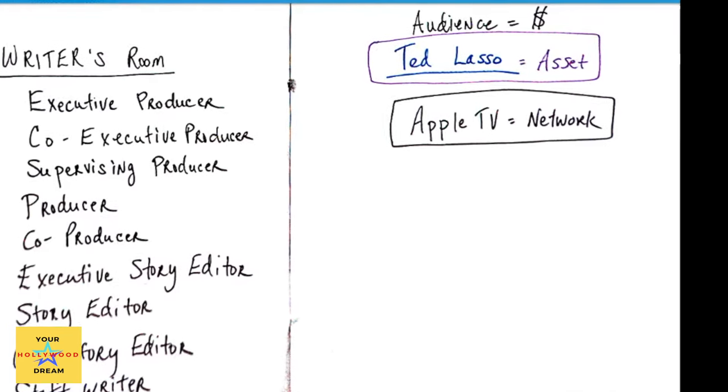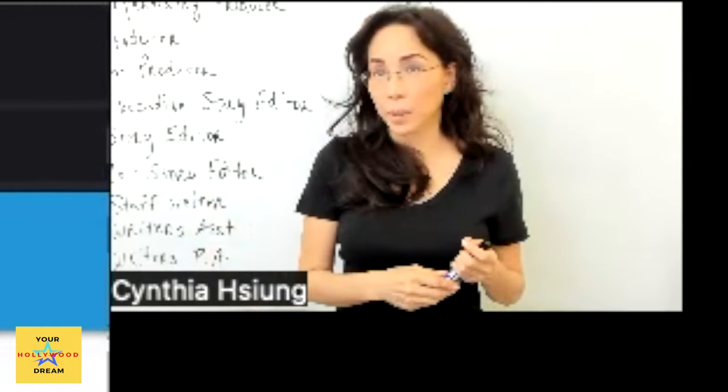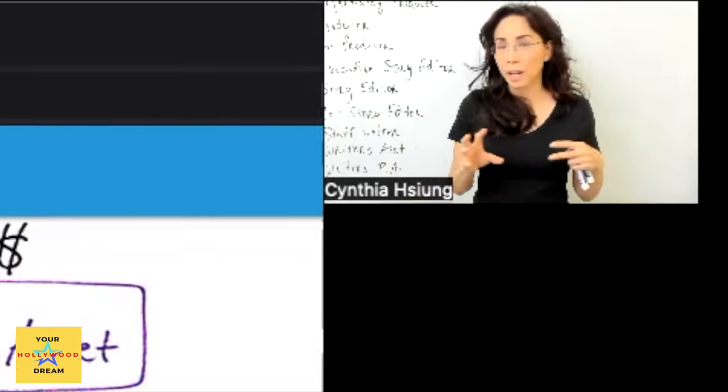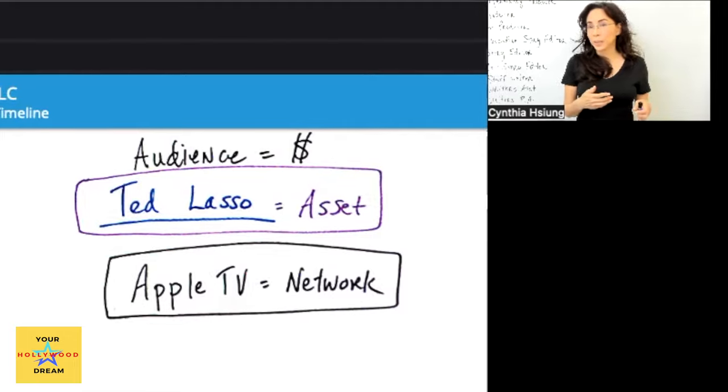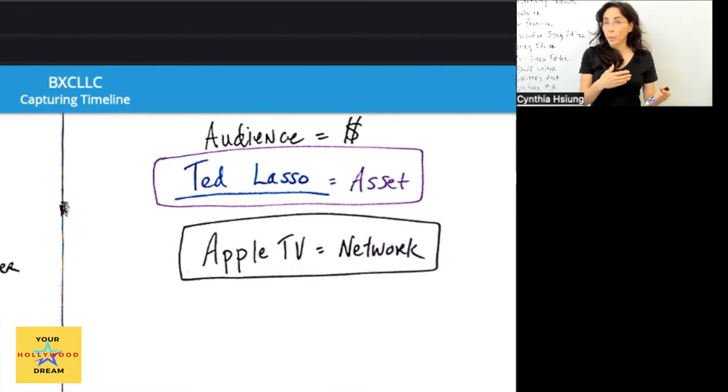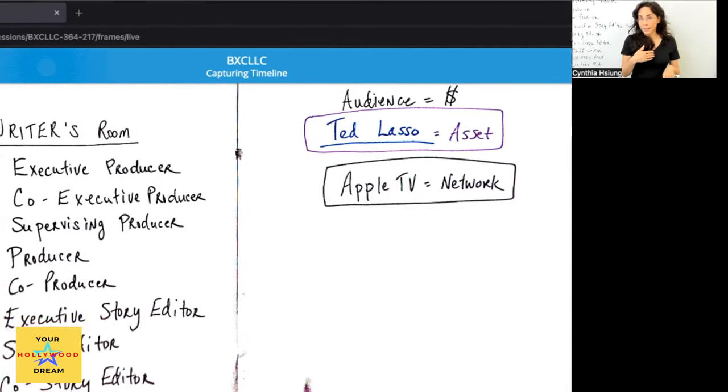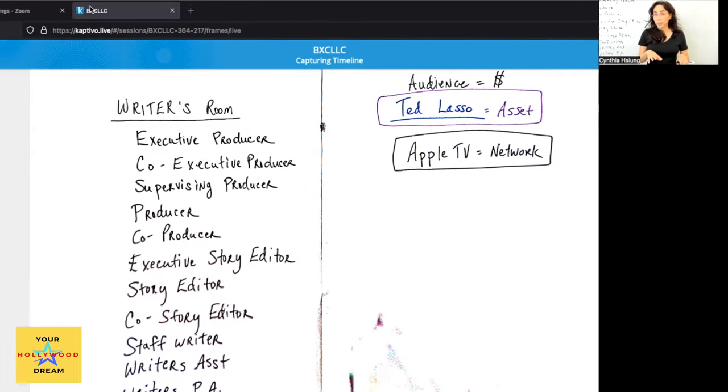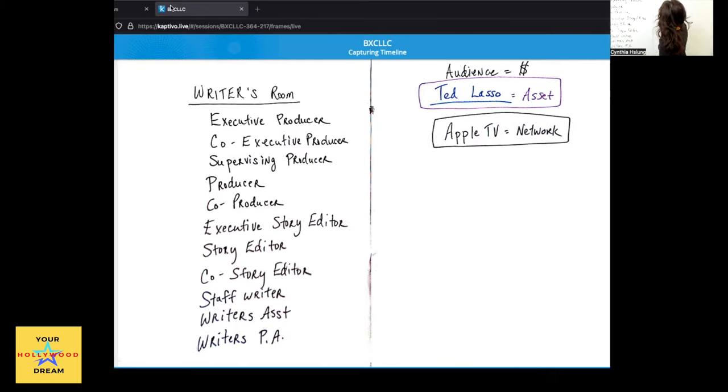So the network gets the asset, Ted Lasso in this case, out to the audience. So behind though the entity of the network is the studio, and the studio is the part of it which most of the time you see in the credits, but it may not be as prominent to the average person because it's really the network which is what I'm going to call front facing versus the studio which is a little bit more behind the scenes. They're the ones that are actively involved in getting the actual series made.